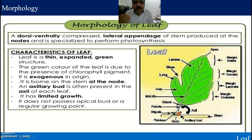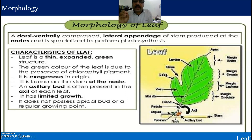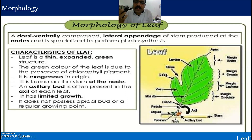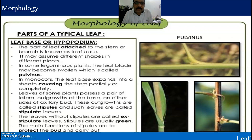The leaf is the most important part which always supports synthesis of food material like starch and sugar. The leaf supports the entire growth and development of the plant. Now, what are the different types of a typical leaf and what are the important characters of a typical leaf?